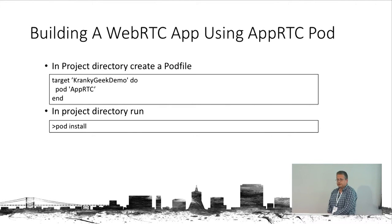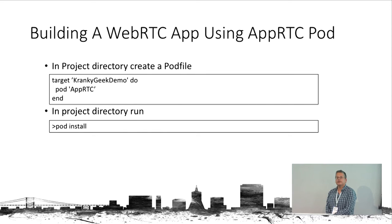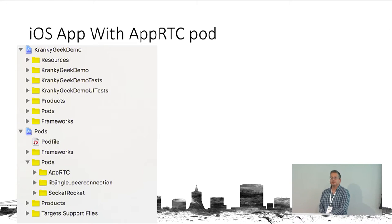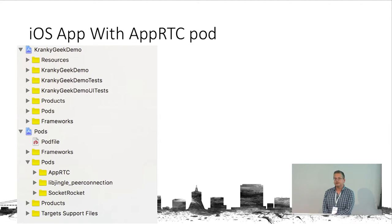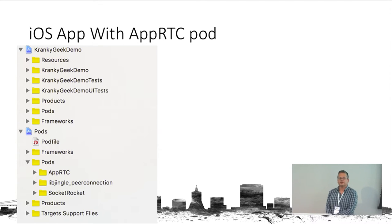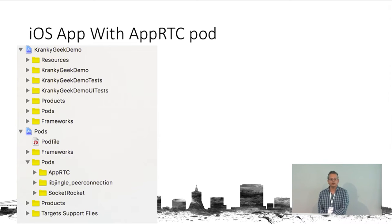To use the pod, we create a project — we'll call it CrunkyGeek demo. In the project directory, from the console, we run pod install and it will install the AppRTC pod for us. What we'll get is the workspace where you can see the files for the AppRTC Geek demo, and also a pods project containing the code from the AppRTC pod, which has two dependencies: lib jingle connection from Pristine.io, and the socket rocket library.